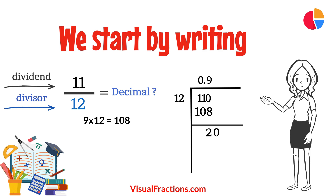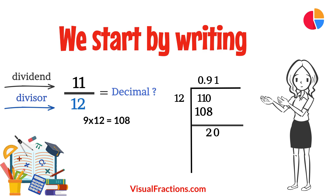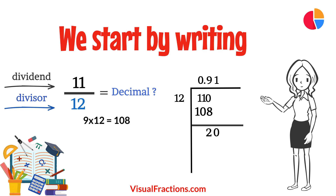Next, we add another 0 to the remainder, making it 20. How many times does 12 go into 20? Once. We place a 1 in the quotient, giving us 0.91.